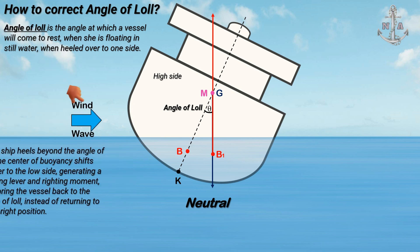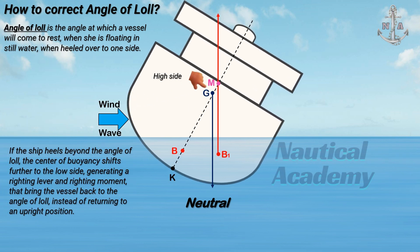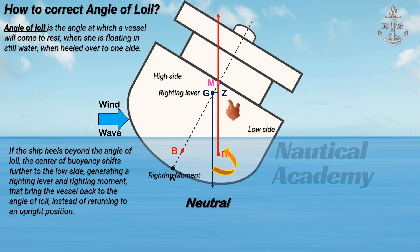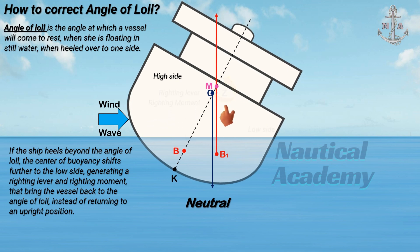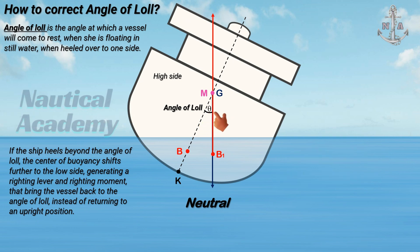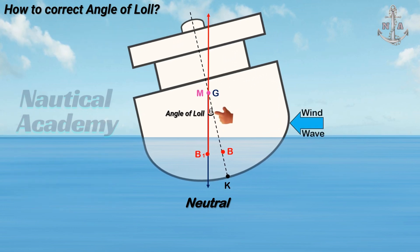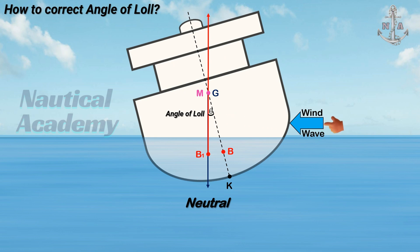If the ship heels beyond the angle of loll, the center of buoyancy shifts further to the low side, generating a righting lever and righting moment that bring the vessel back to the angle of loll, instead of returning to an upright position. The ship oscillates around this angle and may flip to either port or starboard, depending on the external forces applied.